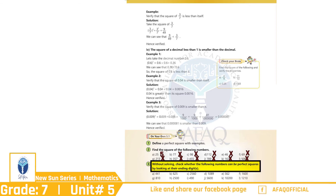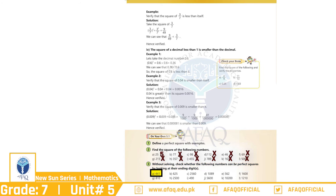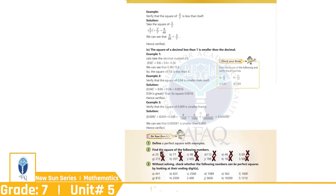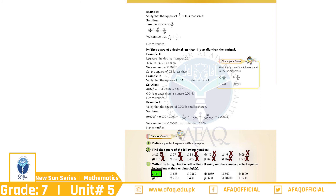Question No. 3: Without solving, check whether the following numbers can be perfect squares by looking at their ending digits. A. 441 — بچو، ہم نے پڑھا تھا کہ digit 1، 4، 6، 9، 00 اور 25 والے نمبر perfect squares ہو سکتے ہیں، لیکن ہو بھی نہیں سکتے۔ اب اگر ہم 441 کو دیکھیں تو 4 اور 1 دونوں perfect squares بنا سکتے ہیں، اس لیے without solving ہم بتا سکتے ہیں کہ 441 کا perfect square بن سکتا ہے۔ اسی طرح سے اگلے سوال آپ نے خود حل کرنے ہیں۔